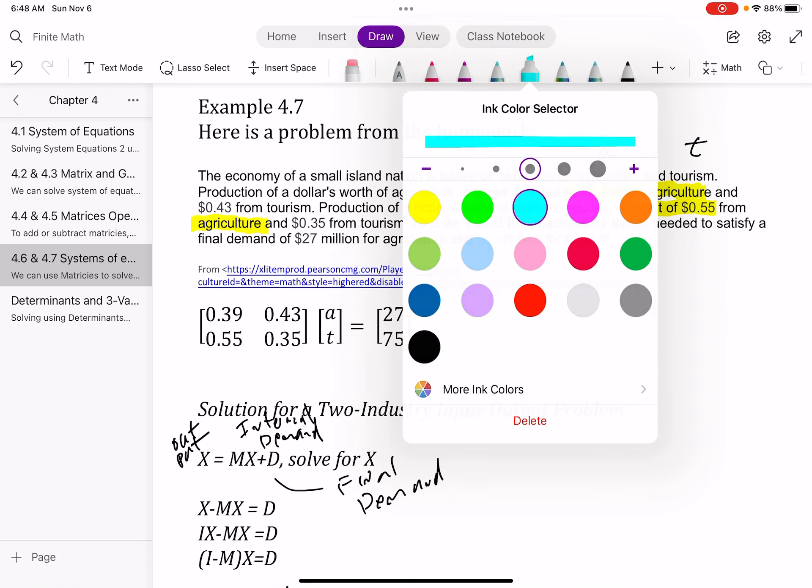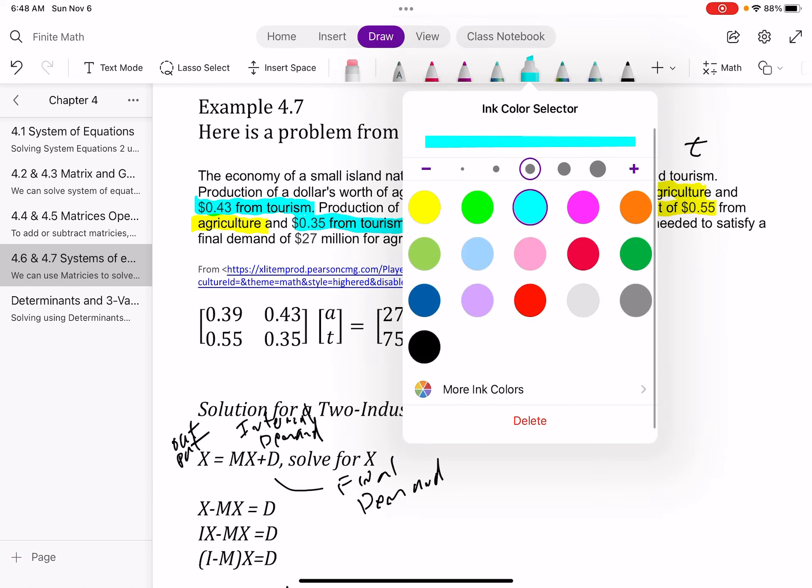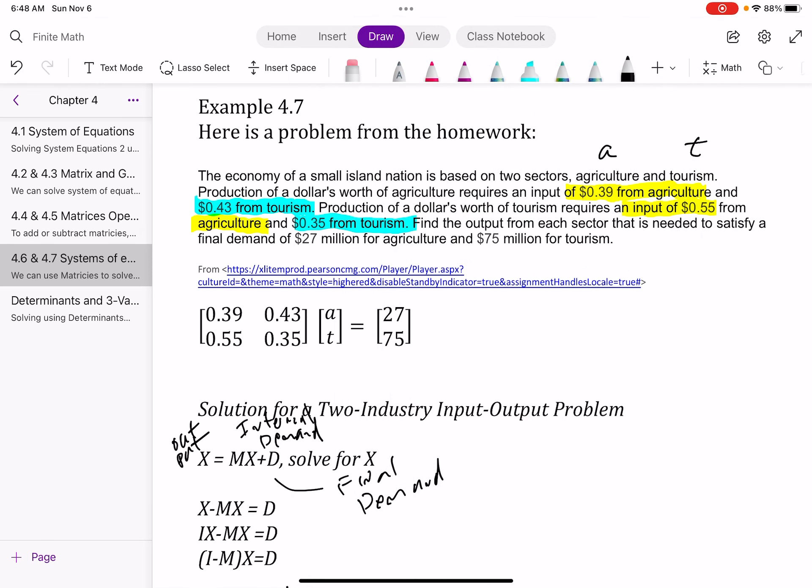And 0.35 for tourism. So I'm going to highlight these in different colors, one for agriculture and one for tourism. Find the output of each sector that is needed to find a final demand of 27 million for agriculture and 75 million for tourism. So that's one reason I didn't use the x1, x2 here because I wanted to see how I put my things together.